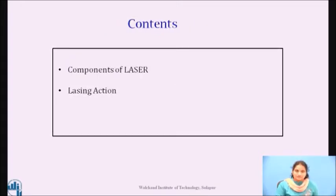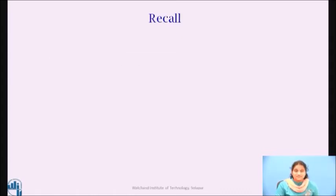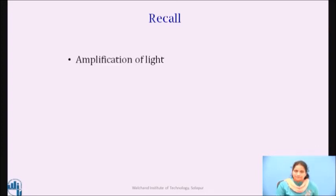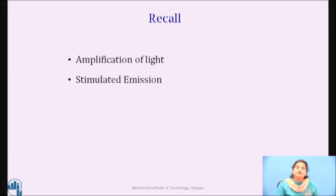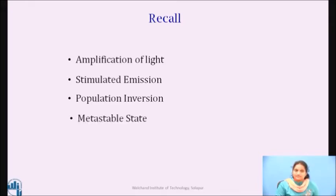These are the contents of this session. In the previous sessions, we have seen that for generation of laser, it requires amplification of light. This amplification of light can be achieved through stimulated emissions. And to achieve stimulated emission exclusively, it requires population inversion and a metastable state. Let us now see in detail about the different components of laser and their function.